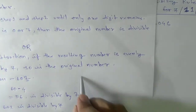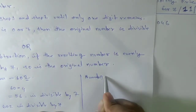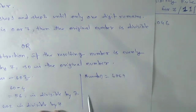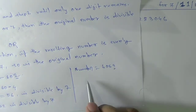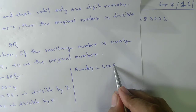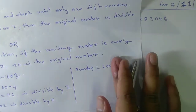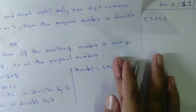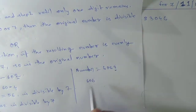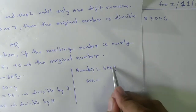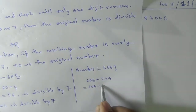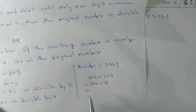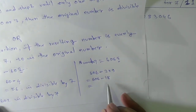Take another number: 6069. We will take the unit digit, which is 9, and double it: 2 times 9 equals 18. The remaining truncated part is 606. Subtract 606 minus 18, and we get 588.